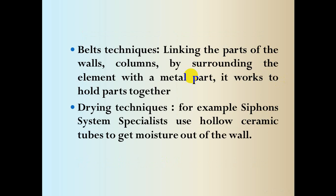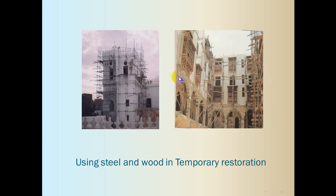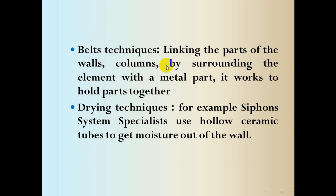Also, there is a technique called belt techniques (تقنيات التحزيم). For example, a section is surrounded with a group of iron bands from top to bottom, holding that section until the restoration is complete. This iron belt surrounds the element to be restored from all directions, linking parts of the wall and columns by surrounding the element with a metal part — a metal belt — holding the element's components together until the specialists finish their work.